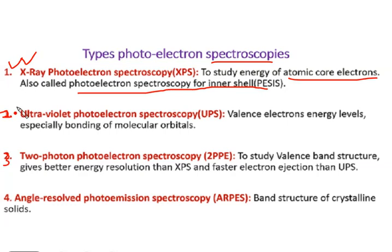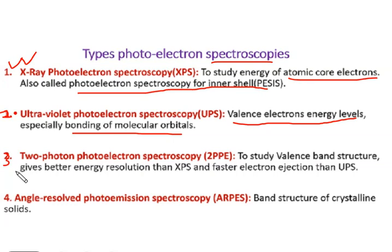The second one is ultraviolet photoelectron spectroscopy. This is used for the study of valence band structure and gives better energy resolution than x-rays.